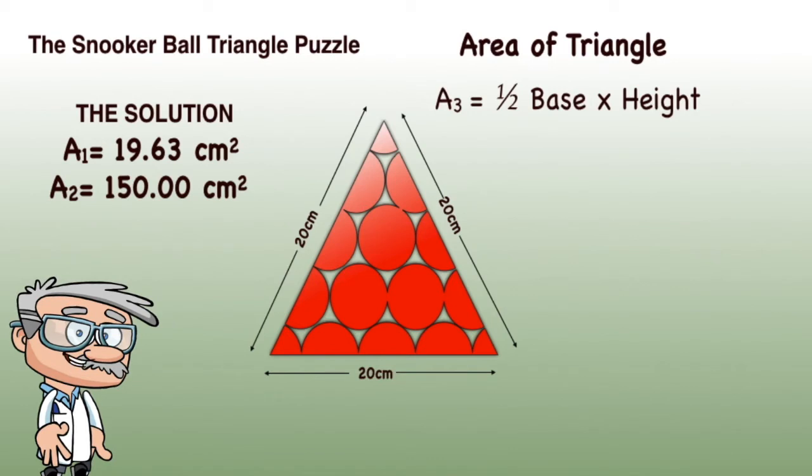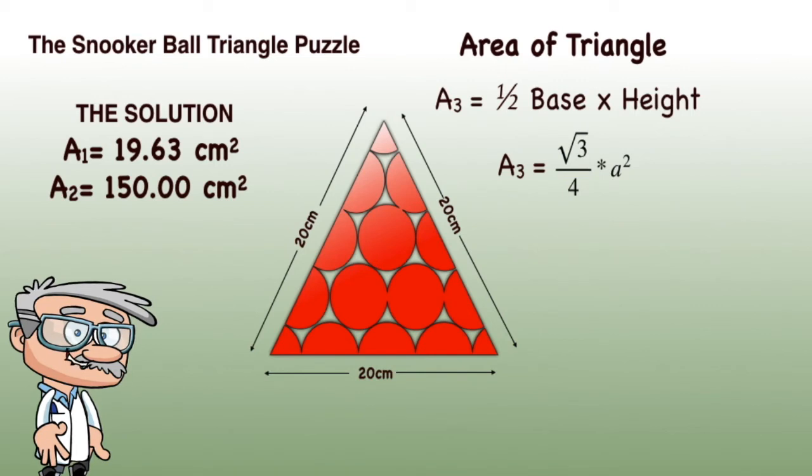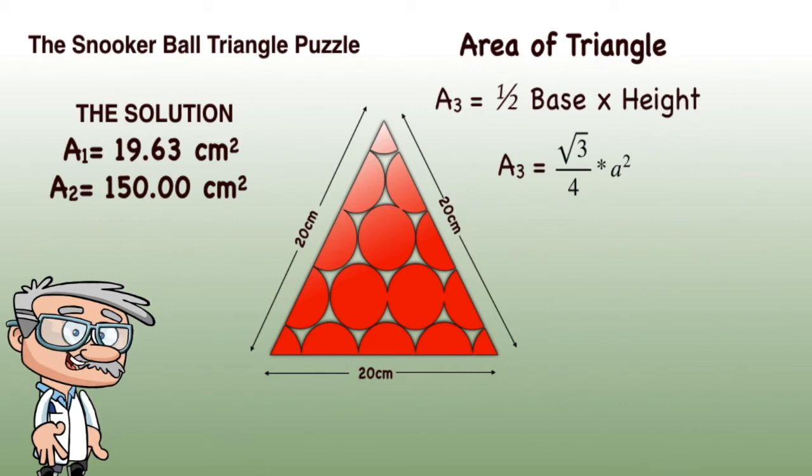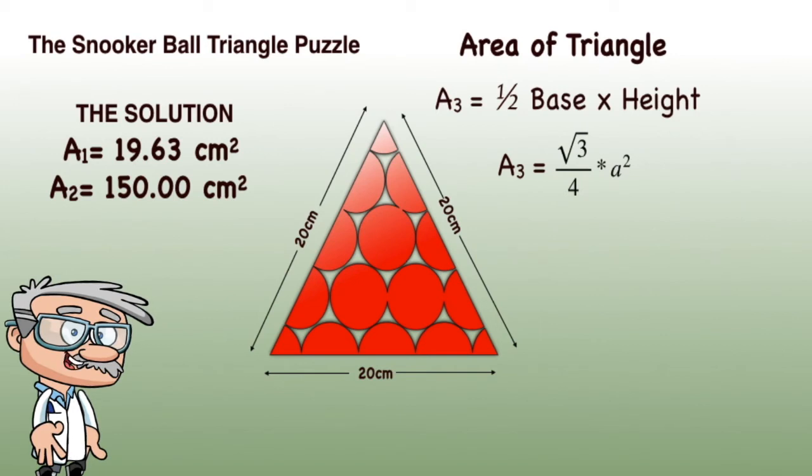Again, I'm not going to do that here. Have a go yourself. There is another formula for calculating the area of an equilateral triangle. That is, a triangle whose sides are the same length. The area equals the square root of 3 divided by 4 times the length of one of the sides squared.